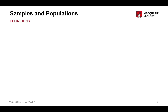Moving on to some of our first definitions. The first distinction I'm going to make is between a sample and a population. I mentioned this briefly last week. Samples and populations are really important because they are the people that our research question applies to and the people that our data come from.